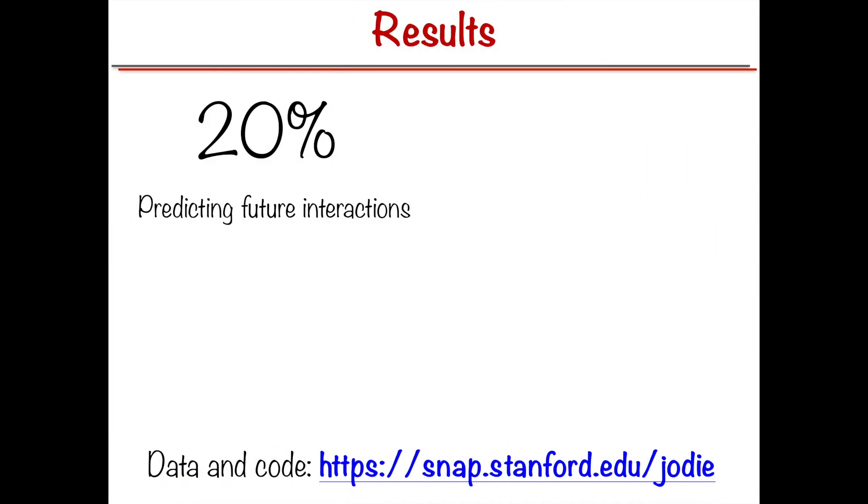In our experiments, we show that JODI is highly efficient in both recommendation and prediction tasks. It performs 20% better than state-of-the-art algorithms in predicting future interactions and 12% better in predicting the change in state of user,